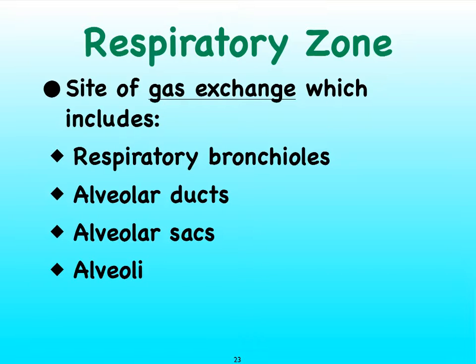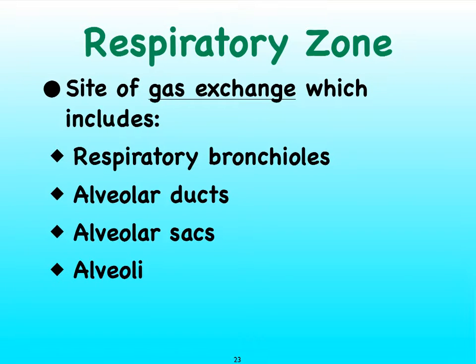Very important: the respiratory zone is the zone where gas exchange can occur. That tells you that the walls of these structures — the respiratory bronchioles, the alveolar ducts, the alveolar sacs, and the individual alveoli — must all be thin enough for oxygen gas and carbon dioxide gas to easily diffuse back and forth.